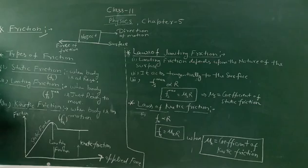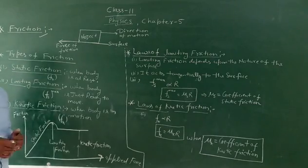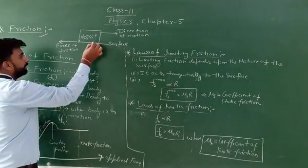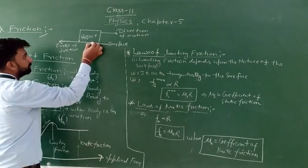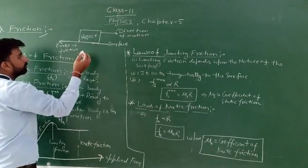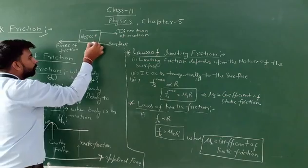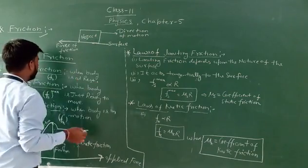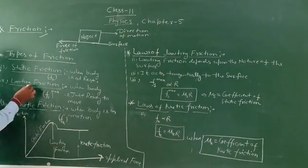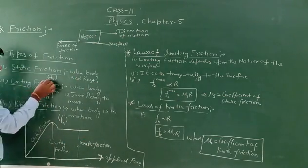Static friction is the friction between an object and a surface when the object is at rest — that is, when there is no motion. The force between the contact surfaces in this condition is known as static friction.